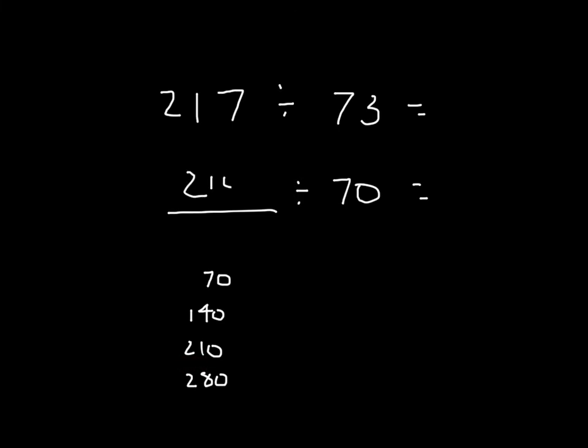So we'll go ahead and write that in there, and then we have 210 divided by 70, and remember, this is our estimation. So 217 divided by 73 is about 210 divided by 70, and if we work that out, 210, the number of tens in there is 21, and we have 21 divided by 7, which is 3.